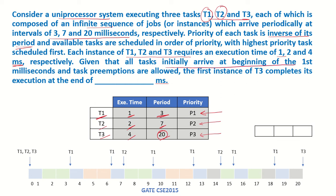Given that all tasks initially arrive at the beginning of the first millisecond, that means from 0 to 1 all three tasks are present in the system, and task preemptions are allowed. That means if a low priority task is running and a high priority task comes in, then that high priority task can preempt the low priority task. We have to find out the first instance of T3 when it completes its execution.